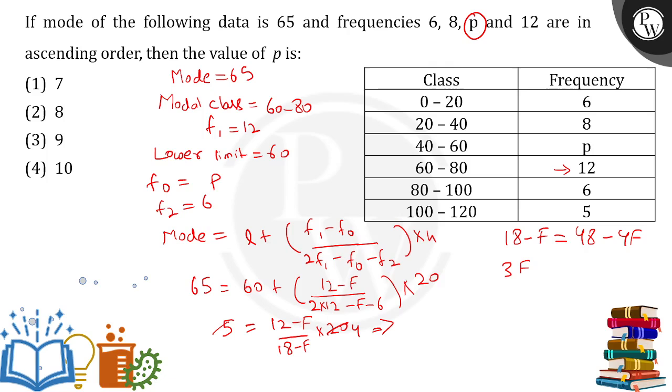We're having 3f equals 48 minus 18, which is 30. From here, the value of f is coming out to be simply 10. The value of p is 10, option number 4. The value of p is correct.